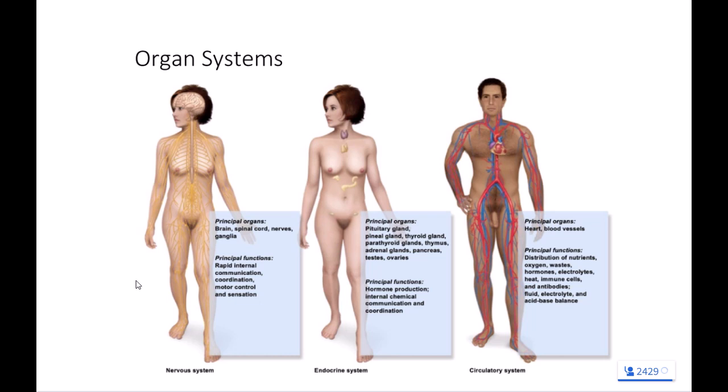Our next body system is the cardiovascular system. Cardio is a root word for heart; vascular refers to tubes. The cardiovascular system is the heart and the blood vessels. Its primary function is to move nutrients through the body — it's the delivery system, the UPS of our bodies, moving supplies and waste products around within our bodies. The circulatory system is the same thing as the cardiovascular system.